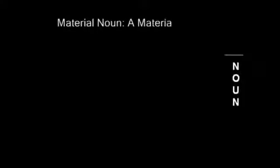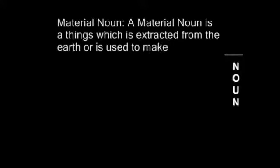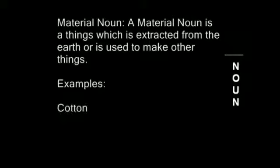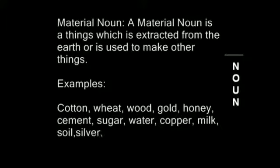Now next — material noun. A material noun is a thing which is extracted from the earth or is used to make other things. For example: cotton, wheat, wood, gold, honey, cement, sugar, water, copper, milk, soil, silver, paper, plastic, silk etc. So this is a material and we can extract it from the earth.